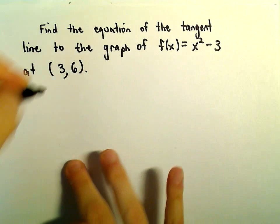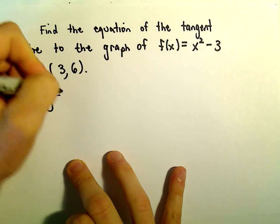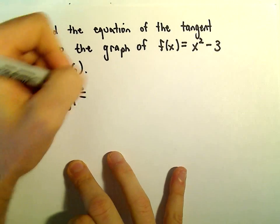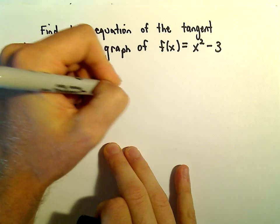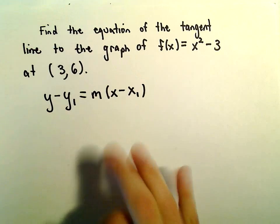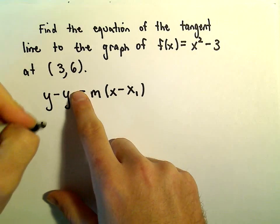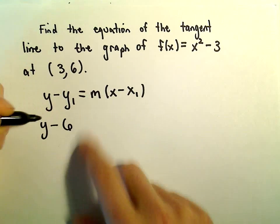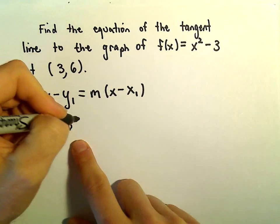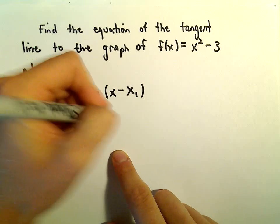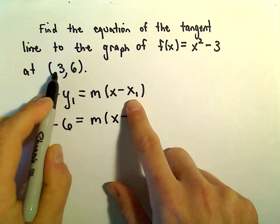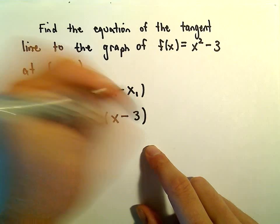To do this, we can just use a point-slope formula. So y minus y1 equals m times x minus x sub 1. We know that the point on the graph that we're using is 3, 6. So I'm just going to plug in 6 for the y sub 1 value.